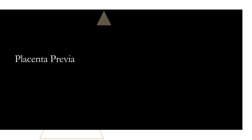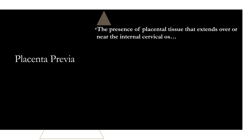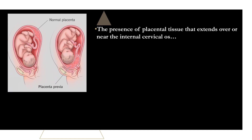Now let's talk about placenta previa. Placenta previa is the presence of placental tissue that extends over or near the internal cervical os. In a normal pregnancy the placenta is usually at the top of the uterus; in placenta previa it's at the bottom, sometimes covering the entire cervical os. Why this happens we're not entirely sure, but one hypothesis is that the upper uterine cavity is not well vascularized due to previous surgery, multiparity, or other issues, causing the placenta to shift downward.